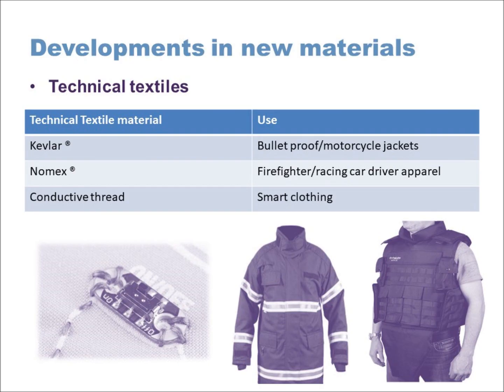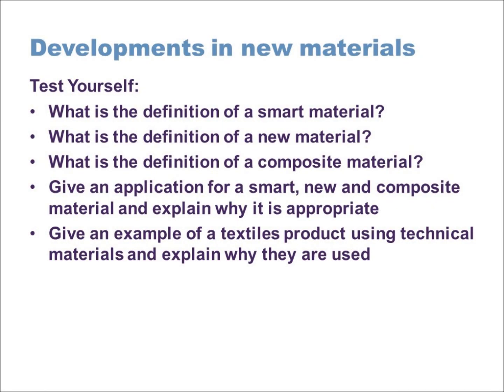Another technical textile is conductive thread. Normal thread is cotton, polyester, or nylon, whereas conductive thread is a nylon thread with the ability to conduct electricity. This is useful for making smart textile clothing where you want to integrate circuitry, LED lights, or electronics into a textiles product — you can use conductive thread to connect all the components. That's a summary of new materials, smart materials, composites, and technical textiles; please test yourself on the questions at the end.